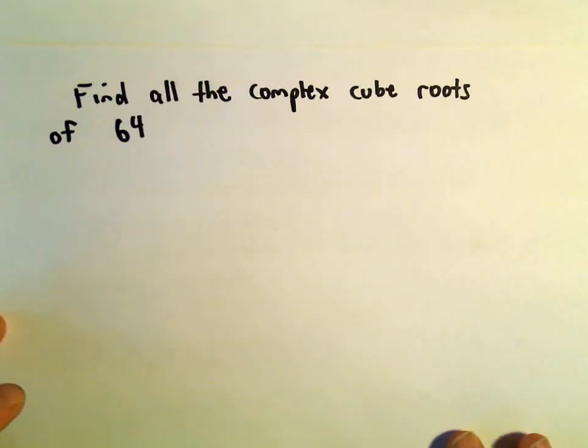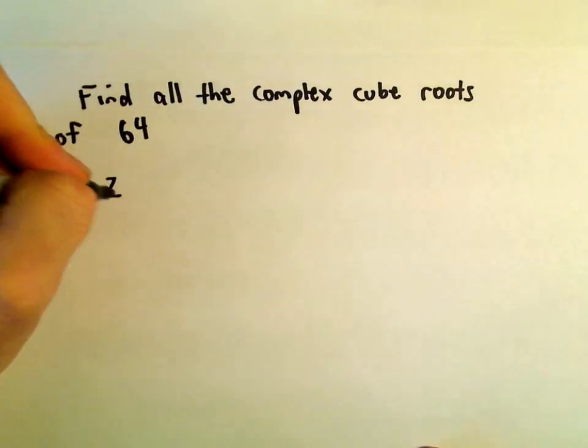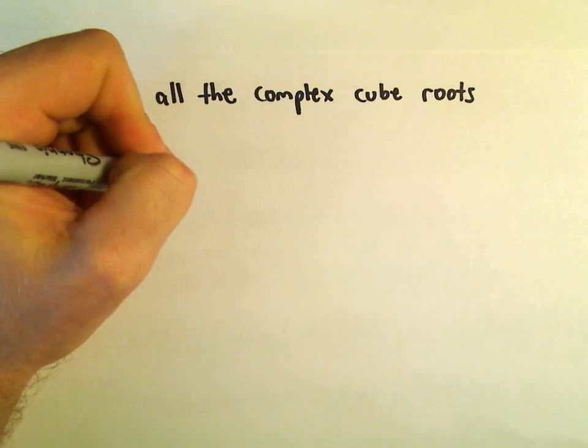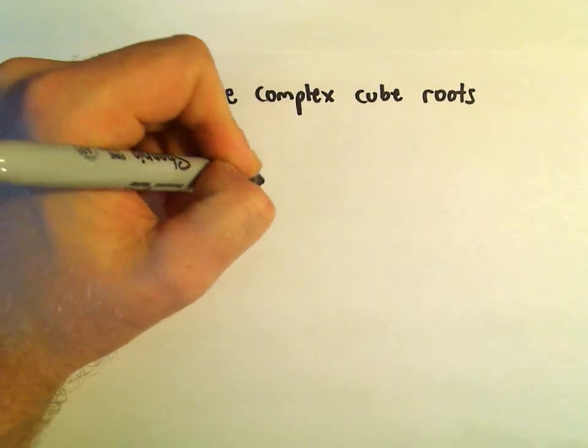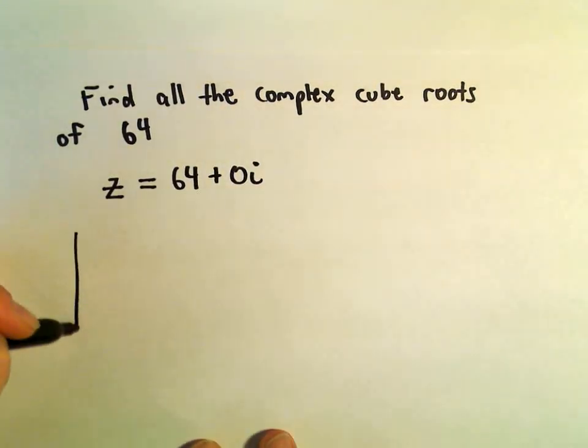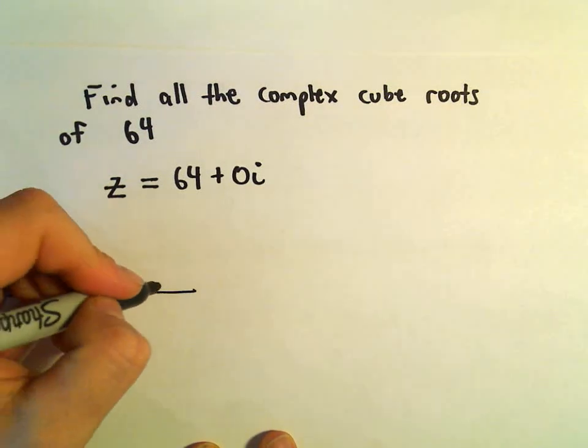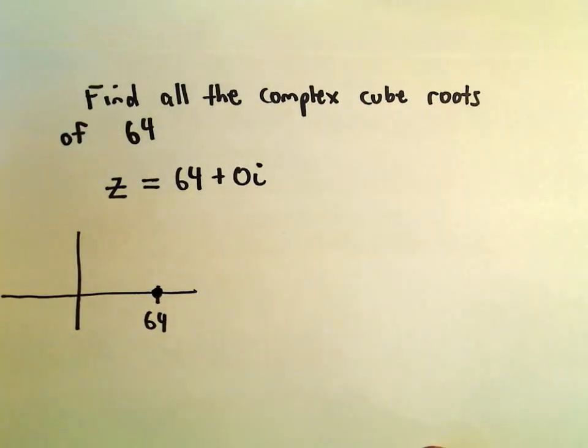So the first thing we'll do is we're going to write 64 as a complex number. Well, we can write that as 64 plus 0i. We'll have to convert this to polar form. So it basically says you go over 64 on the real axis, and we don't move up or down on the imaginary axis.